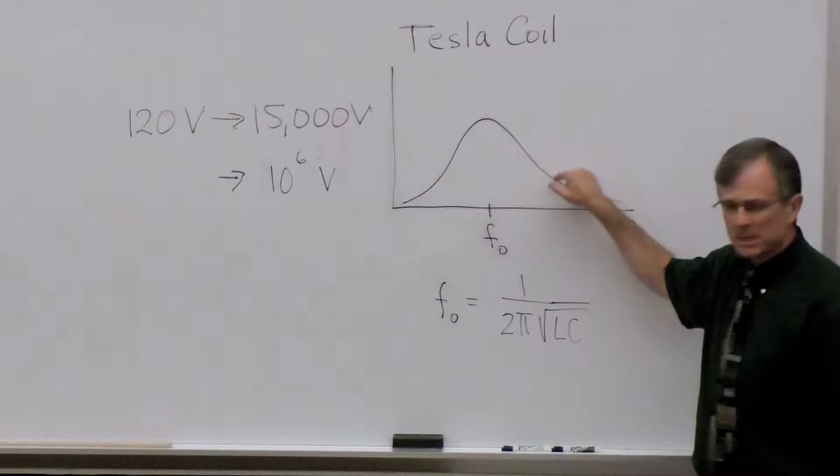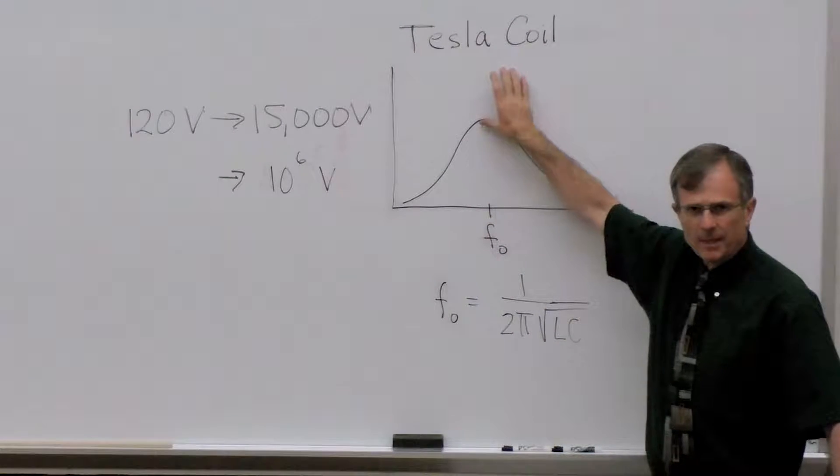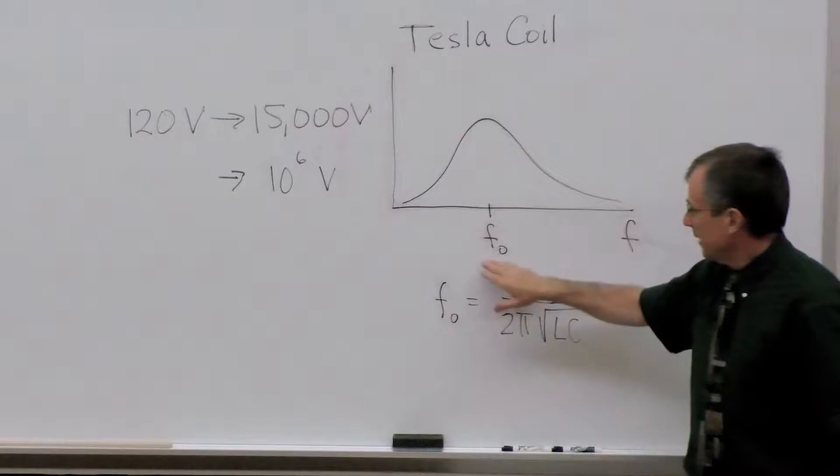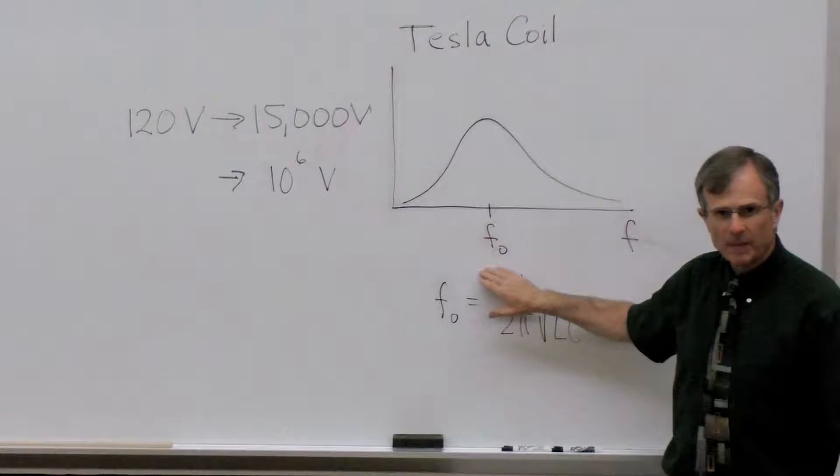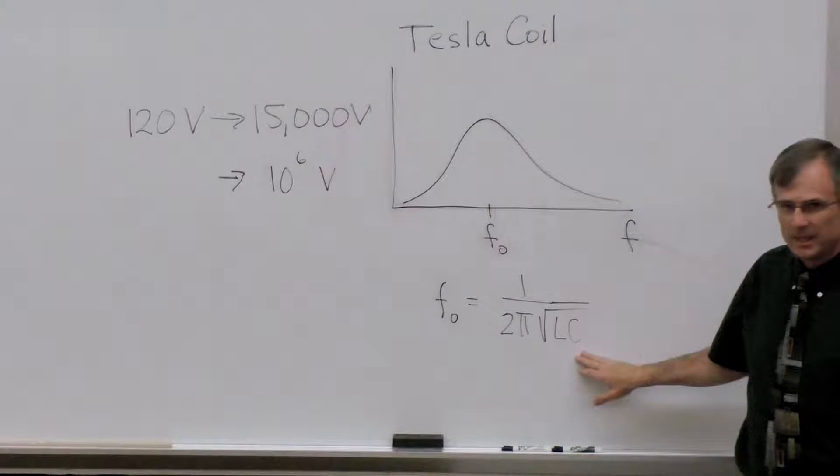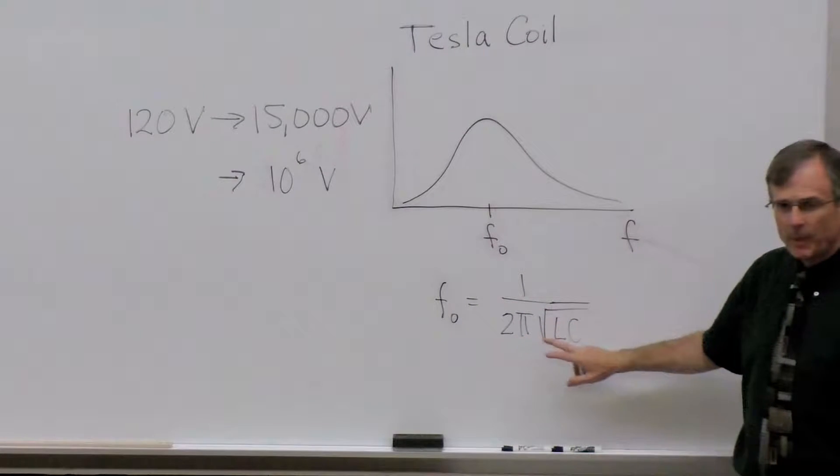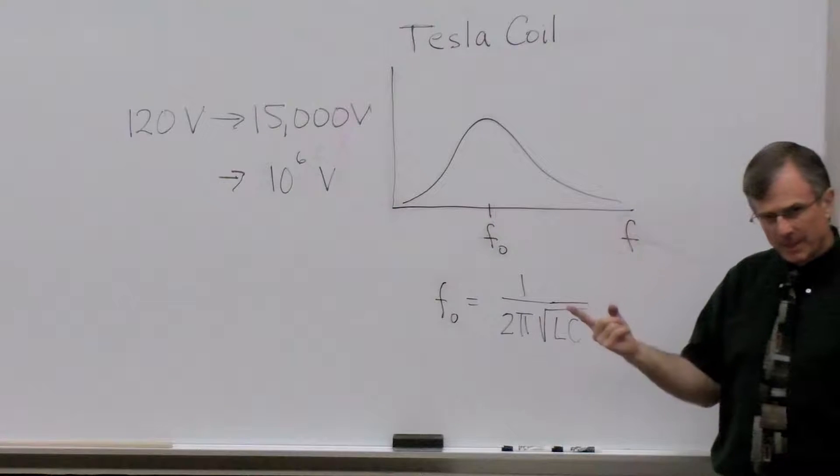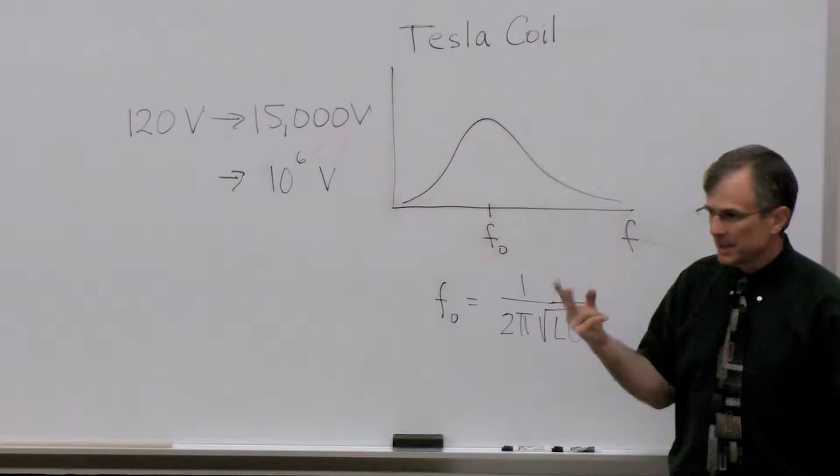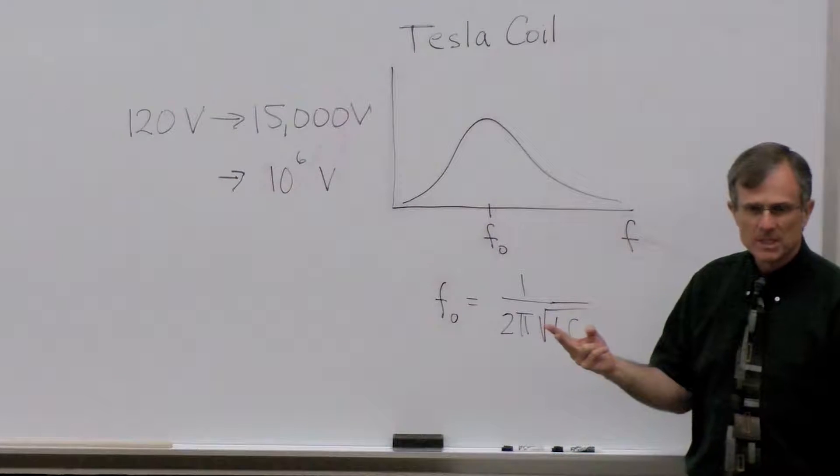And that frequency is denoted here by F-naught. And the value of F-naught goes like 1 over 2 pi times the square root of the inductor, L, times the effective capacitor, C.